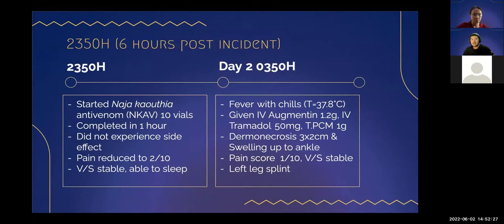Treatment was started with Naja kaothia anti-venom (NKAV), 10 vials, completed within one hour. The patient experienced no side effects and pain reduced to 2 out of 10. Vital signs were stable and the patient was able to sleep. However, the next day at around 3:50 AM, the patient developed fever with chills and was given acetaminophen and paracetamol/PCM, and the fever slightly subsided. At that time, there was dermonecrosis of 3 by 2 cm and swelling up to the ankle, with only mild pain of 1 out of 10. Vital signs were stable and a left leg splint was applied.